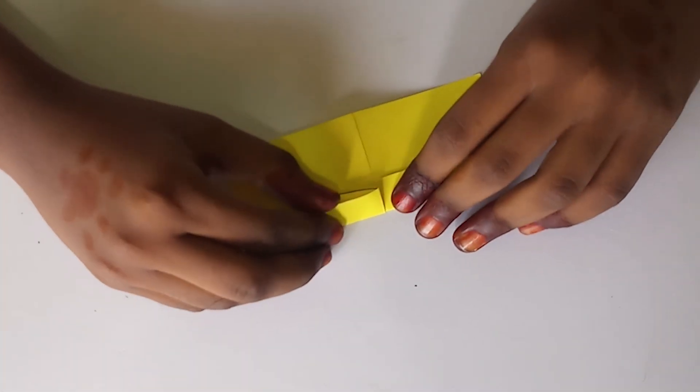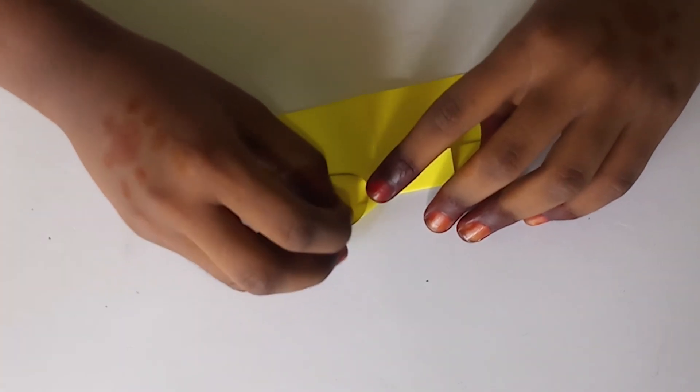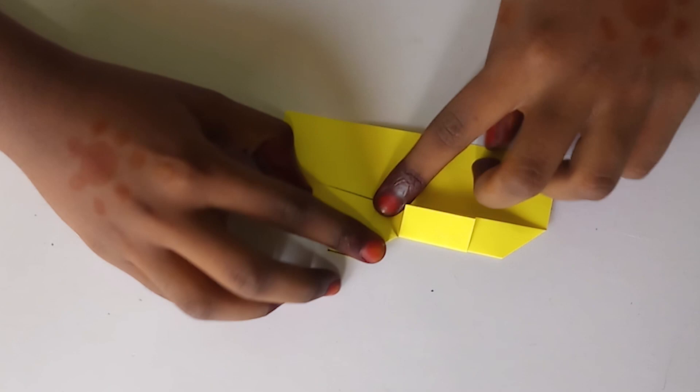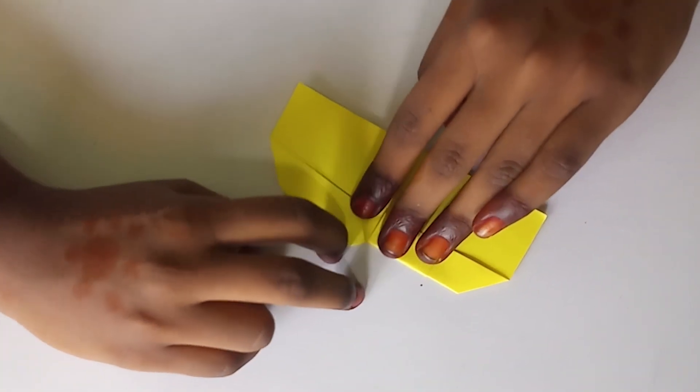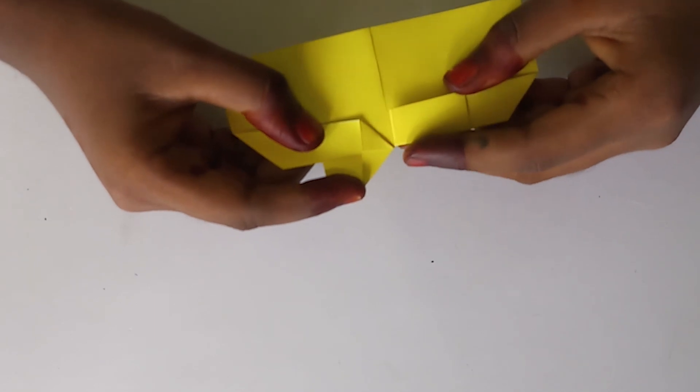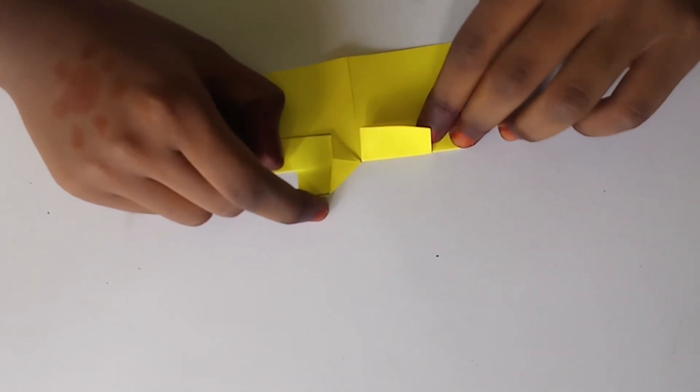Now, take this pocket and push this triangle in. Like this. Do it on the opposite side also.